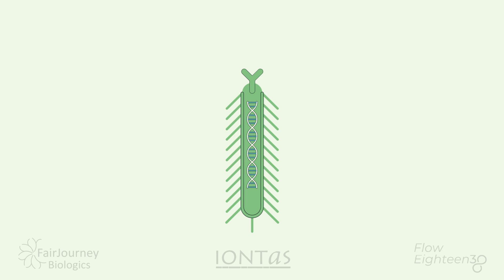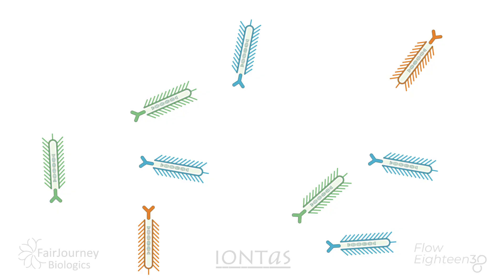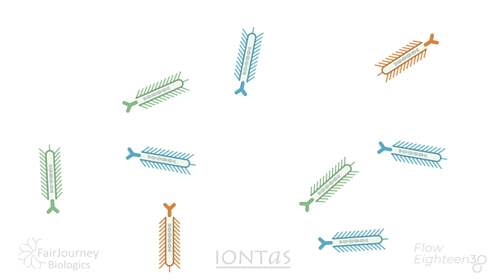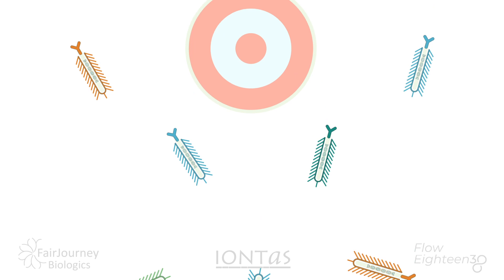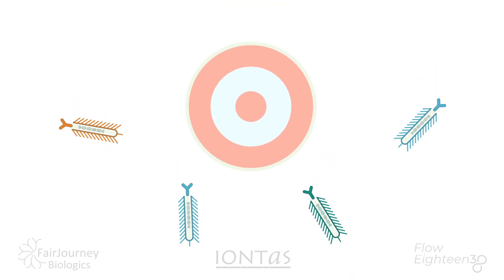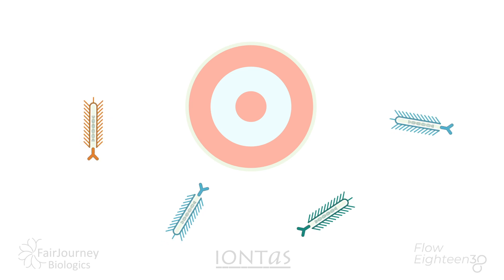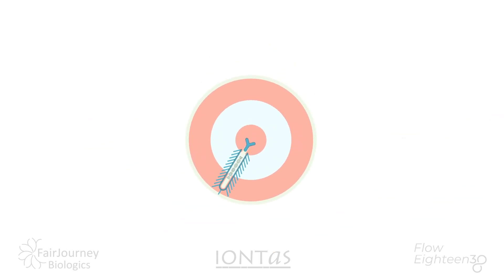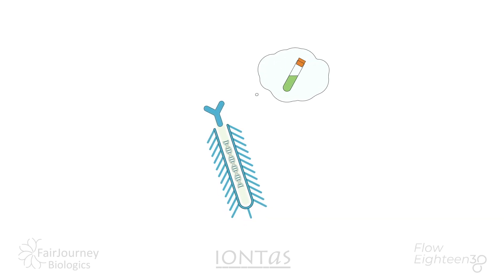We do this in a way that generates a phage particle with the encoded antibody protein on the outside. Thus, we've made a tiny package linking the recipe for the antibody — the gene — on the inside, with the resulting product, the antibody, on the outside. We can create very large libraries of these phage particles containing billions of different antibody genes. And through a relatively simple process we call biopanning, phage particles which display an antibody that binds the target are retained, while unbound phage are washed away.